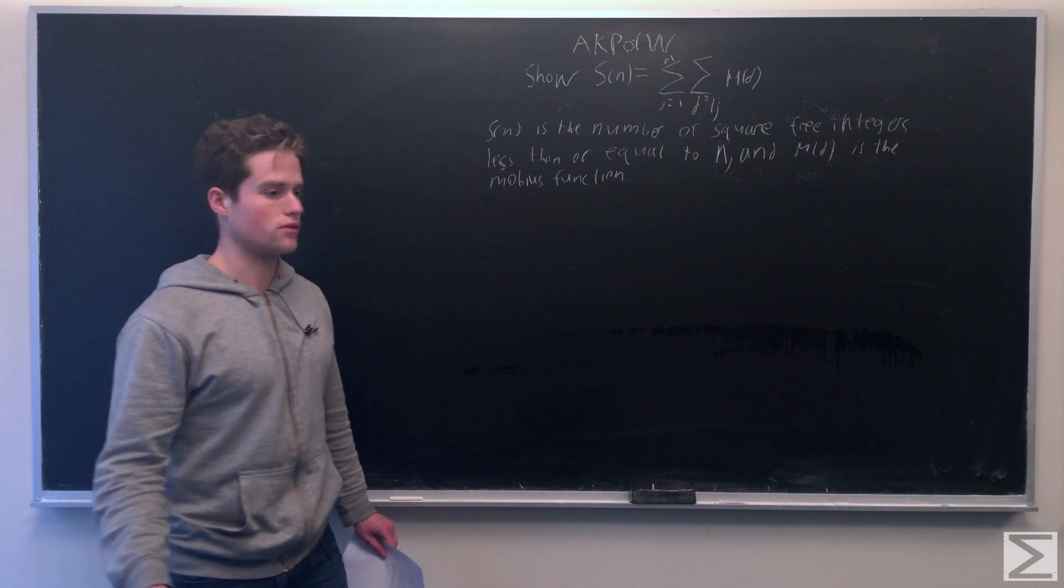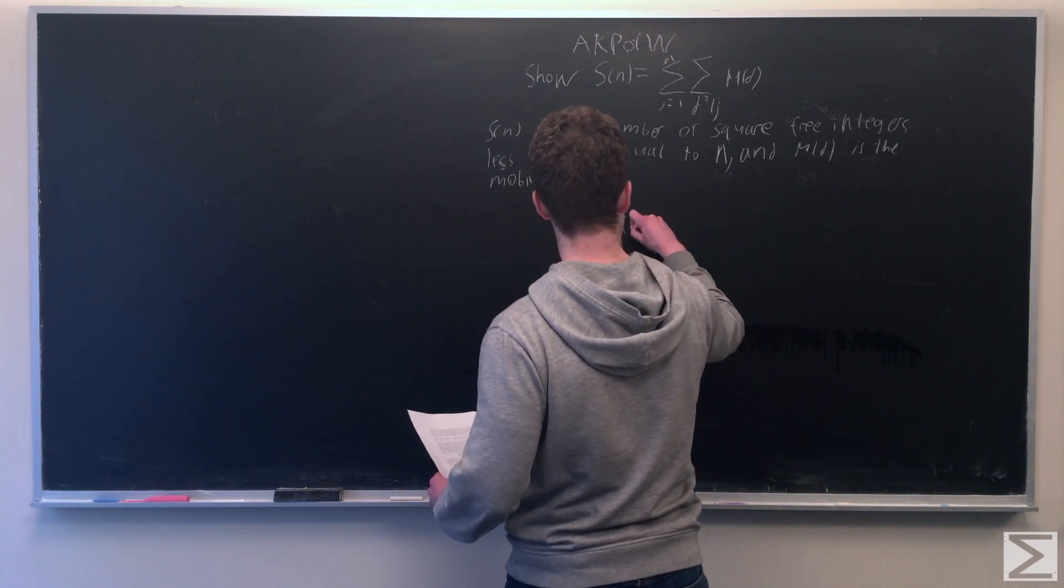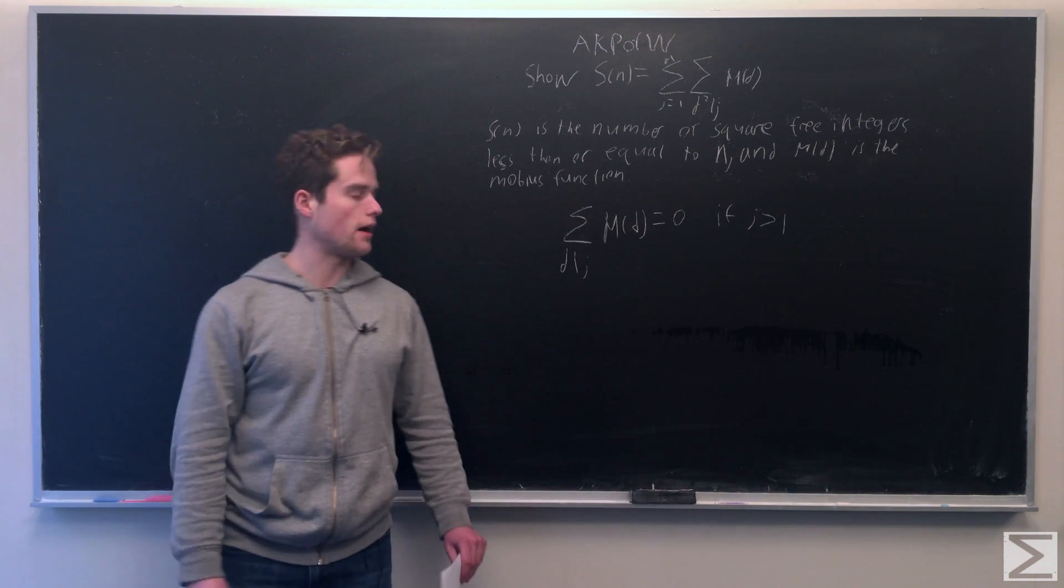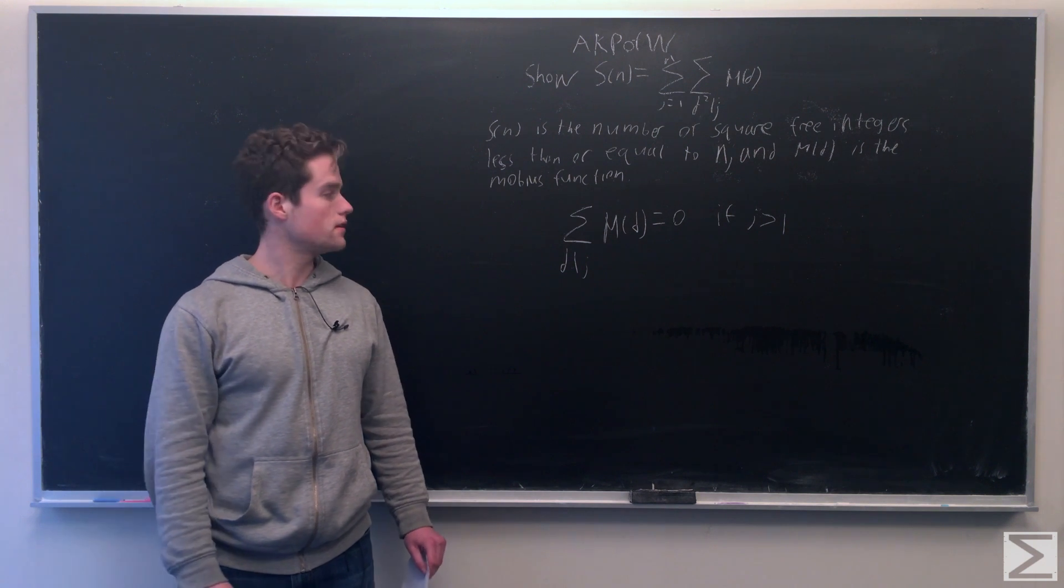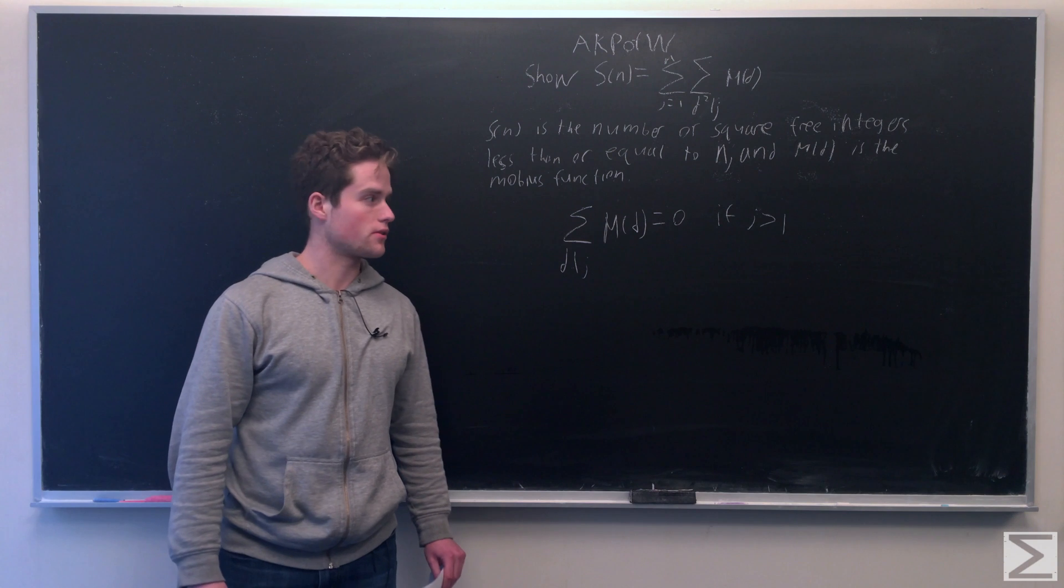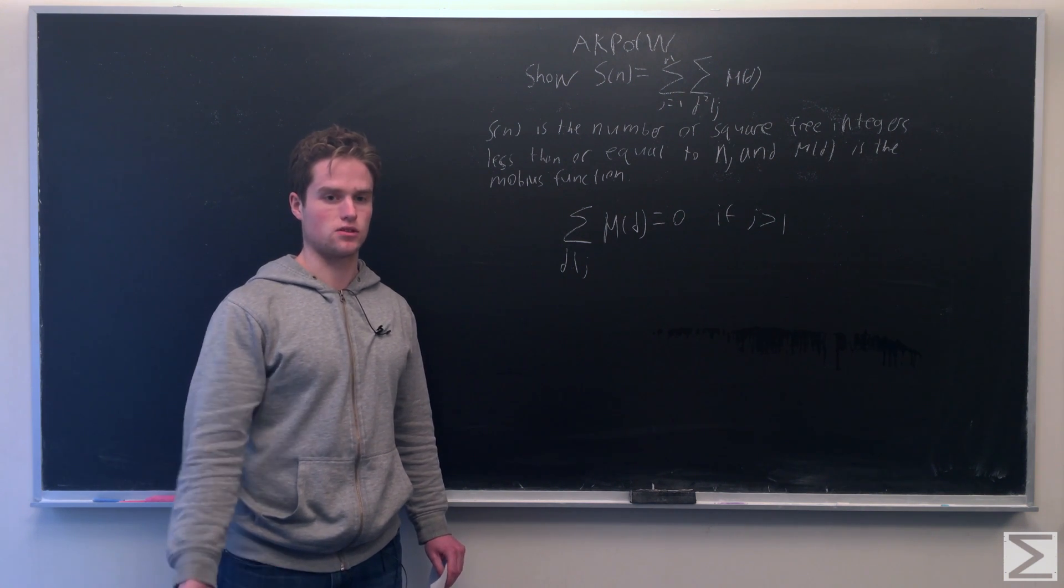And to do this, first we can establish that the sum over Mobius function of d, over all d, such that d divides j, equals 0 if j is greater than 1. If it equals 1, clearly it's just 1.